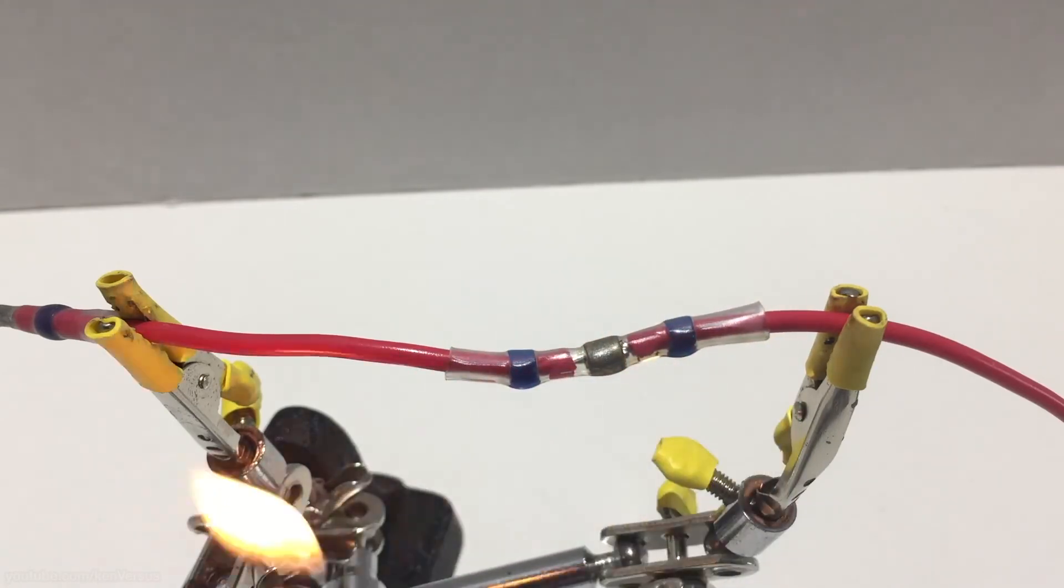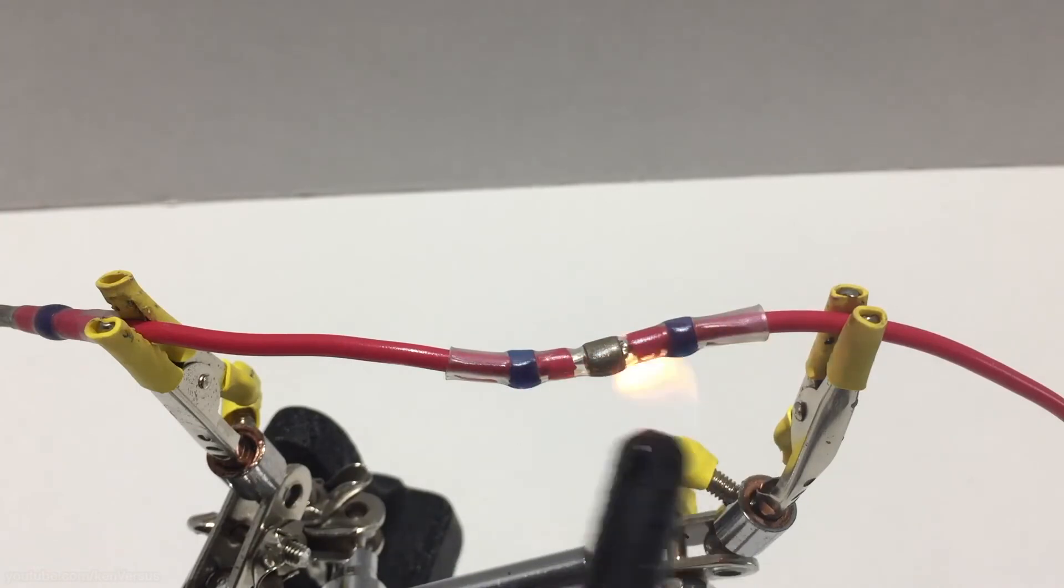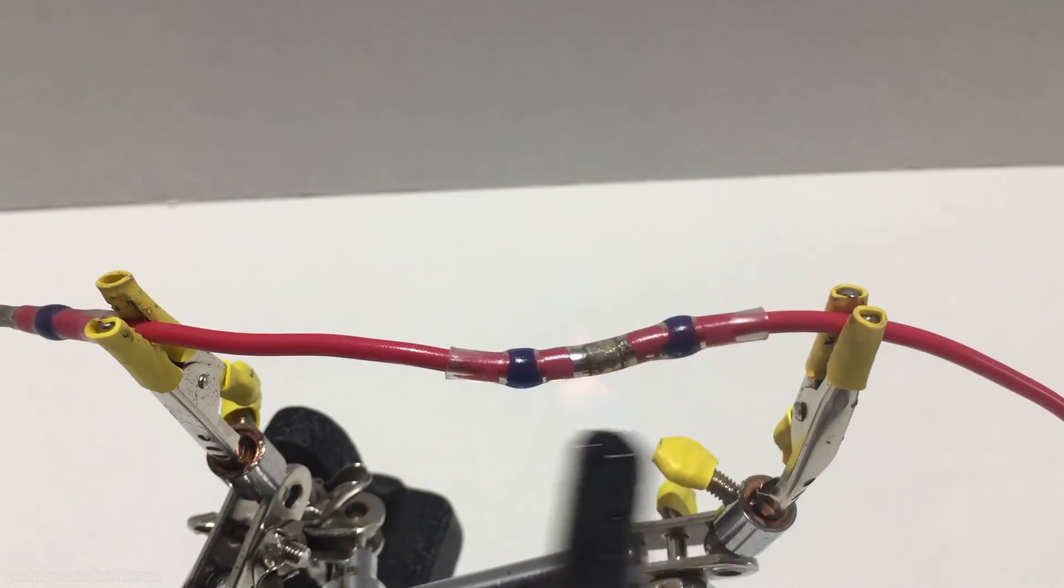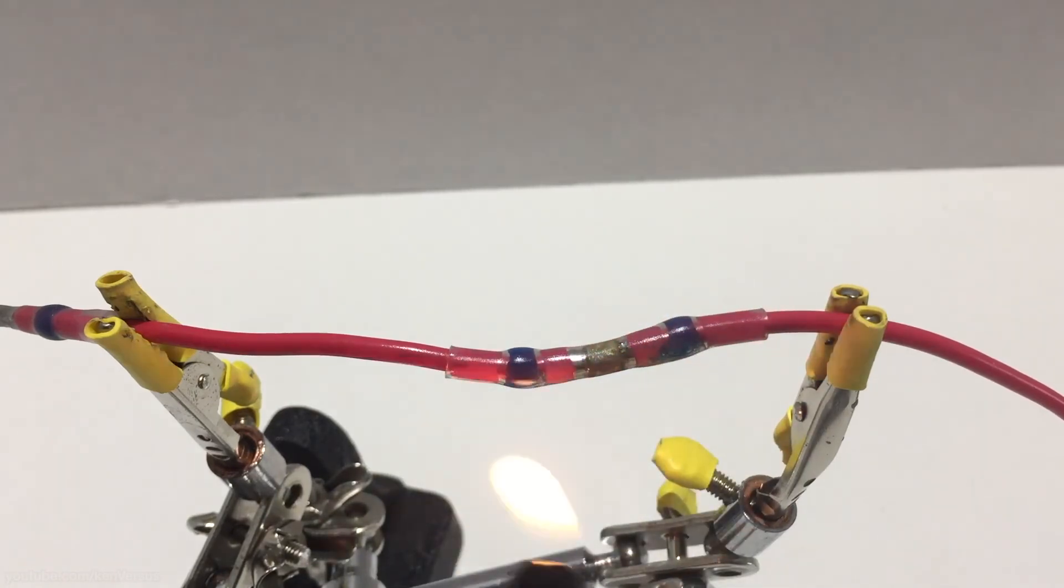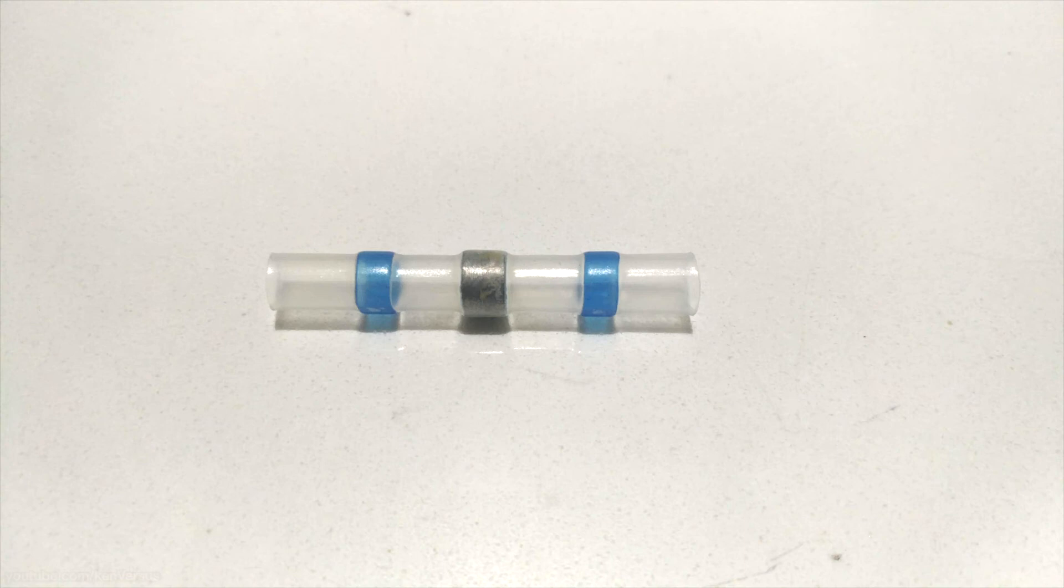The joint is now soldered together and has a nice heat shrink tubing around it, and it will also be water resistant. If you're not really good with a soldering iron, these self-soldering sleeves are a perfect addition for projects around the house since they splice the wires together and they also protect them in one shot.